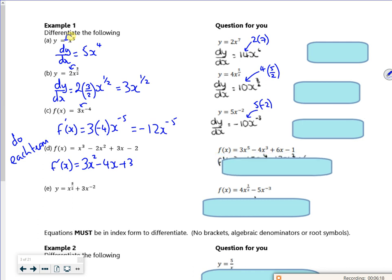Try it with this one, so it should have 15x to the 4, minus 12x squared, plus 6, and the 1 disappears.